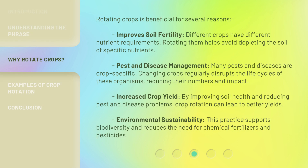Rotating crops is beneficial for several reasons. First, it improves soil fertility — different crops have different nutrient requirements, so rotating them helps avoid depleting the soil of specific nutrients. Second, pest and disease management: many pests and diseases are crop-specific, and changing crops regularly disrupts the life cycles of these organisms, reducing their numbers and impact.